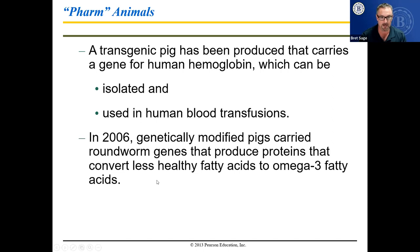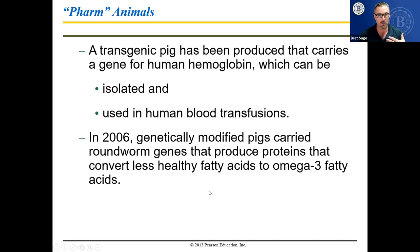In 2006, genetically modified pigs carried roundworm genes that produce proteins converting less healthy fatty acids to omega-3 fatty acids. Omega-3 fatty acids are necessary for the development of neurons in your brain. If you eat animal fat, which can lead to plaques in your arteries, theoretically this protein would convert those unhealthy trans fats or saturated fats into omega-3 fatty acids, which would help your brain develop.